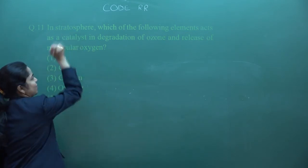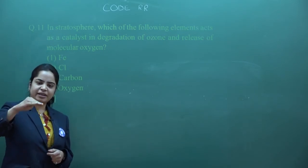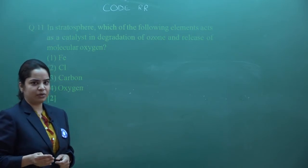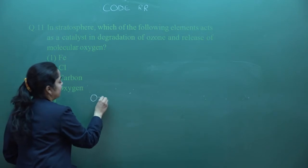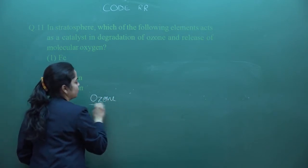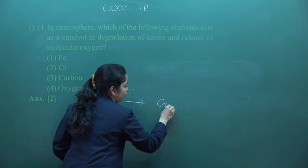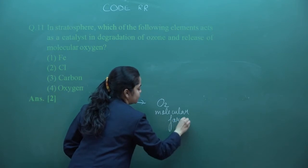First of all we shall know what is stratosphere. Stratosphere is the layer of atmosphere where ozone is found. Ozone does protection work as we discussed in previous question. So here we are talking about how ozone degrades - that means we are converting O3 form to O2 form, that is the molecular form of oxygen.